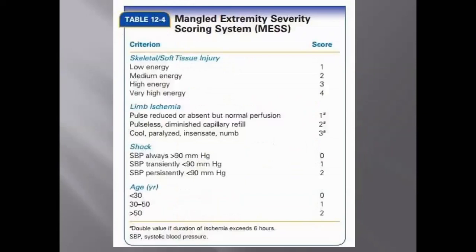Then the MESS score was formed, based on a retrospective study of 26 patients. The components in MESS score are: skeletal and soft tissue injury — low energy scores 1, medium energy 2, high energy 3, very high energy 4. Second component is limb ischemia — pulse reduced but normal perfusion scores 1, pulse absent with decreased capillary refill scores 2, limb cool/paralyzed/insensate scores 3. When the duration of presentation is more than 6 hours, you double the ischemia score.